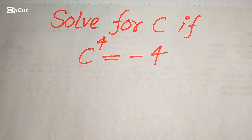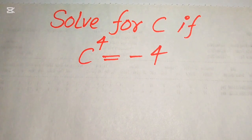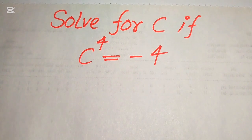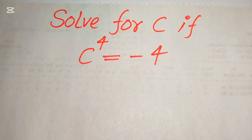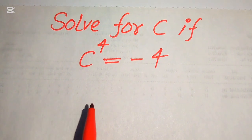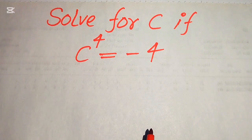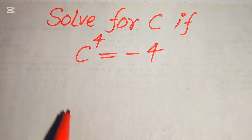Hello everyone, welcome to solve this nice math algebra problem. Here we have c to the power of 4 equals minus 4, and we solve this problem for the values of c. The order of this equation is 4, which means that this equation has 4 roots, and now we need to find all 4 roots.